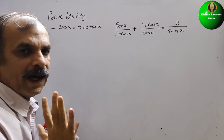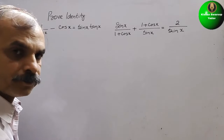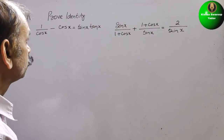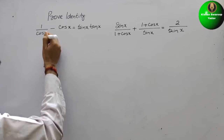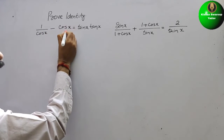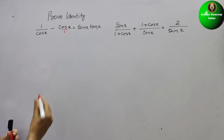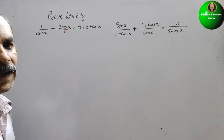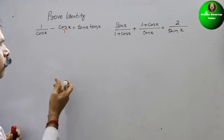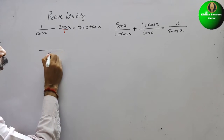We will solve only the LHS, the left hand side. Now here if you see, this is in P by Q form. This is normal. So we will make this also P by Q form. Now we will take the LCM of this. The LCM will be cos x.